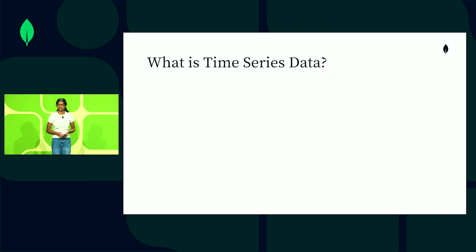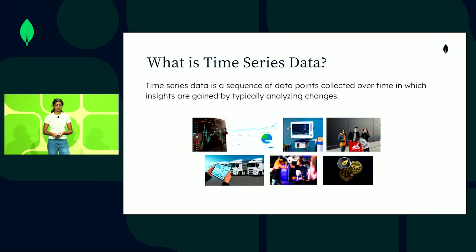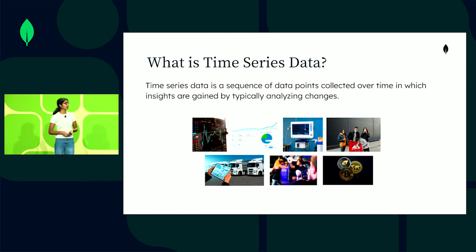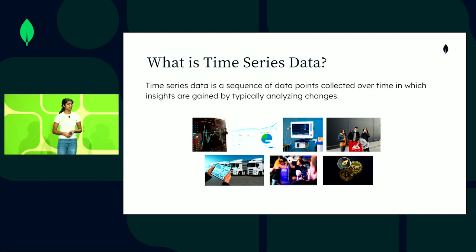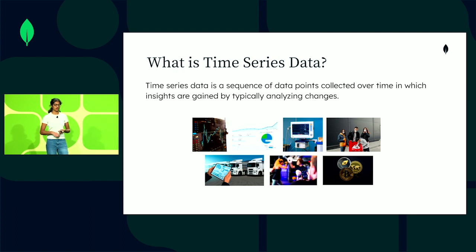What is time series data? Time series data is a sequence of data points collected over time in which insights are typically gained by analyzing changes. We usually want to retrieve or work with all of the data points for a specific time period from one or more specific sources. Time series workloads generally have a few key properties: data normally arrives in time order, it's mostly immutable — primarily inserted rather than updated — it's indexed on time, and the data is often coming in high in volume.